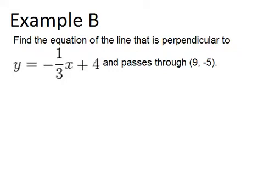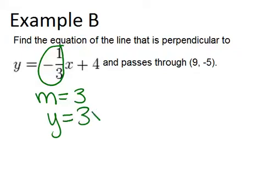Now, to be perpendicular to that line, this line has a slope of negative one-third, so that means the line we're looking for will have a slope of positive three over one, or just three. So the line we are looking for will start out as y equals three x plus, and then we don't know our y-intercept, B, yet.